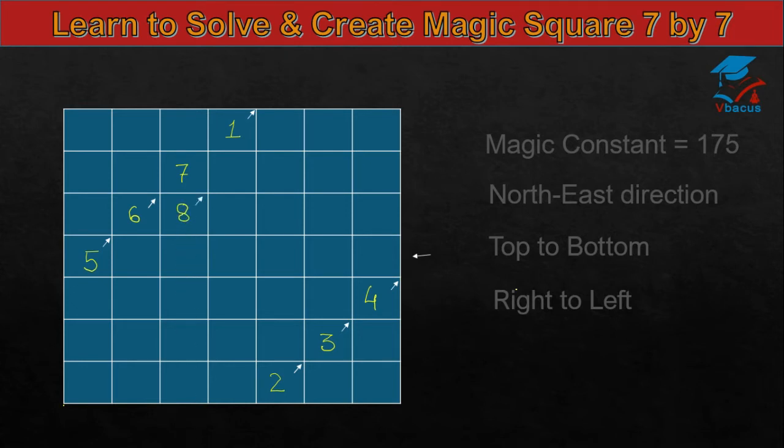Again, north-east direction, 9, 10, there is no square, come to bottom, write 11. Again, north-east direction, 12, north-east direction, there is no square, go to left. 13, north-east direction, 14, next square is filled, so write 15 below 14.